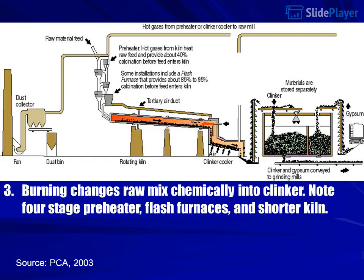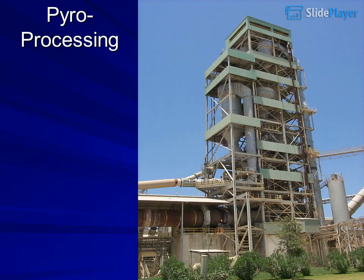Step 3: Burning changes raw mix chemically into clinker. Note: 4-stage preheater, flash furnaces, and shorter kiln. Source: PCA 2003, Figure 2-4, steps in the modern dry process manufacture of Portland cement. Bioprocessing modernized in 1999 by HBZ and Fuller — 1,500 TPD to 2,000 TPD; fuel consumption decreased by 15 percent.